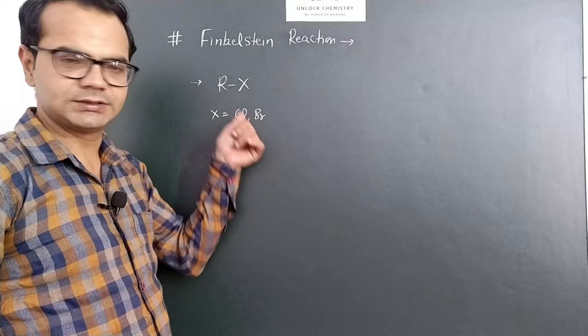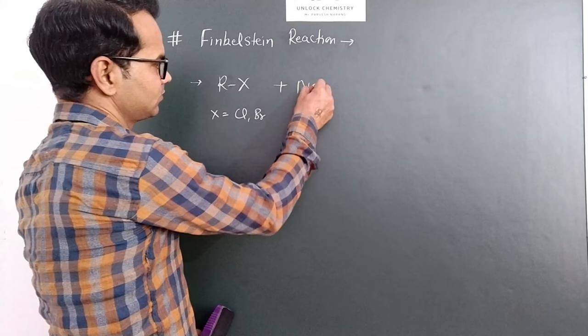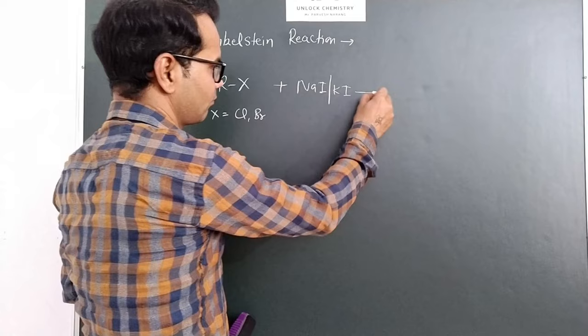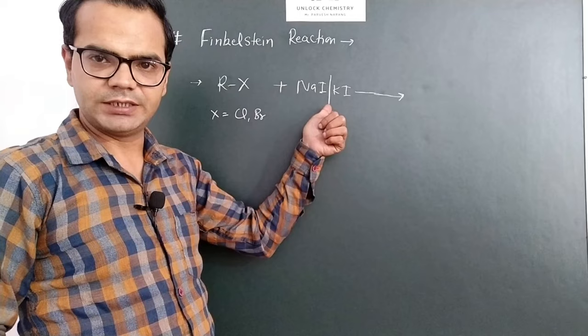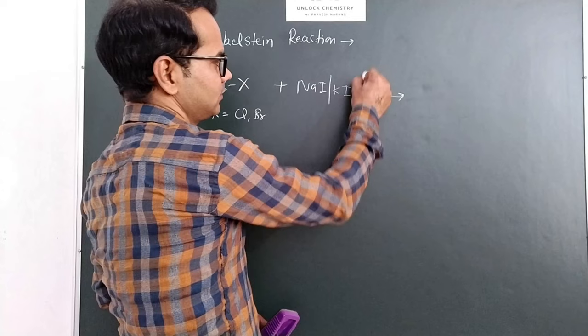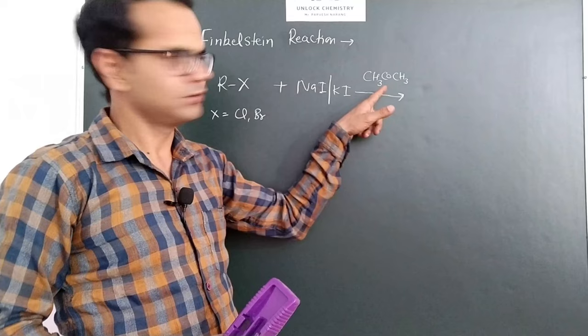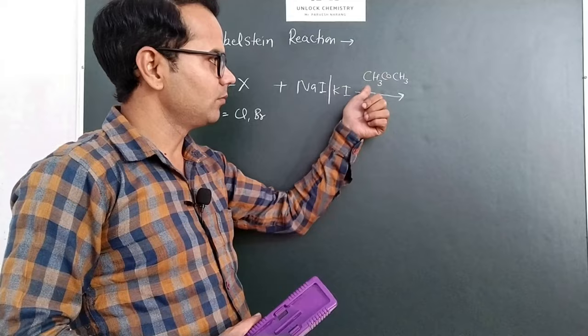It is the reaction of alkyl chlorides or alkyl bromides with sodium iodide or potassium iodide. And here one organic solvent is used, that is acetone, CH3COCH3, which means propanone or acetone. Actually, this is a polar aprotic solvent.